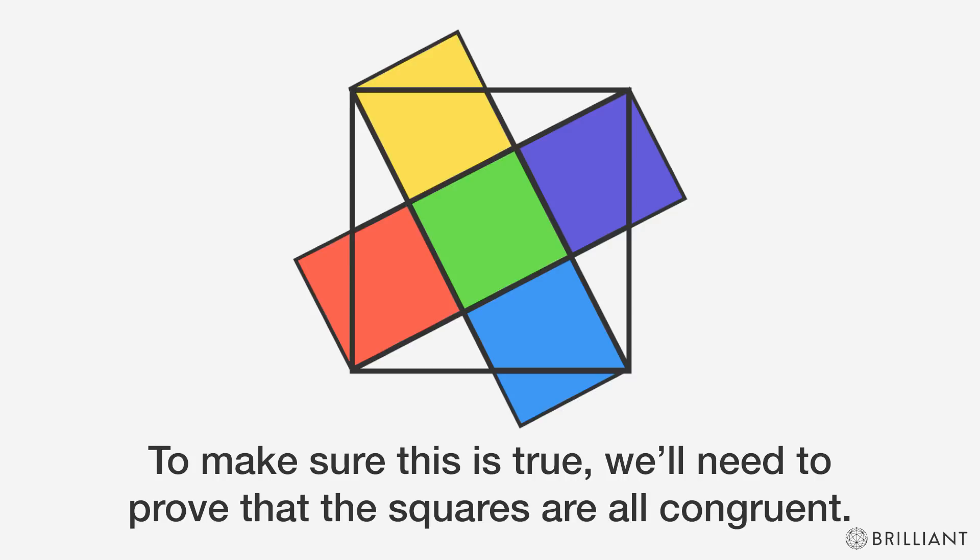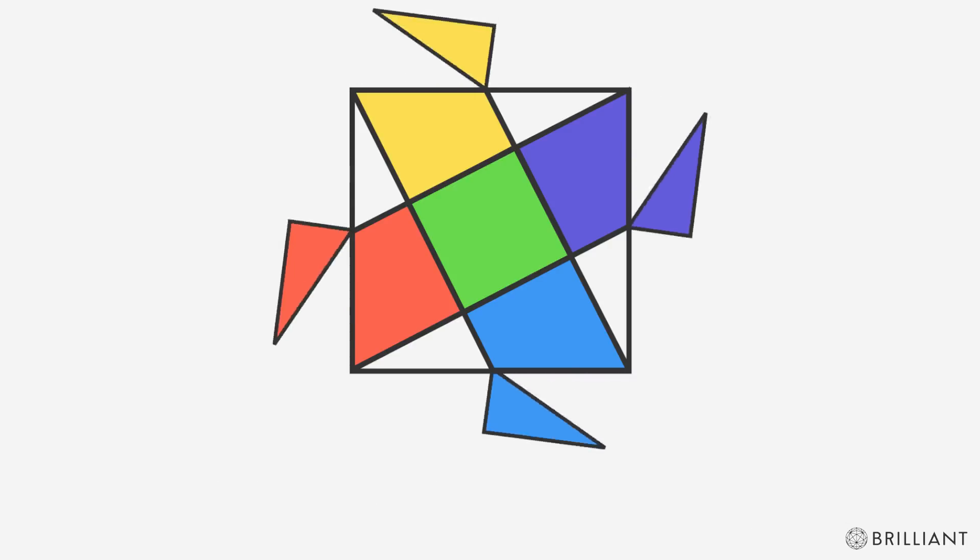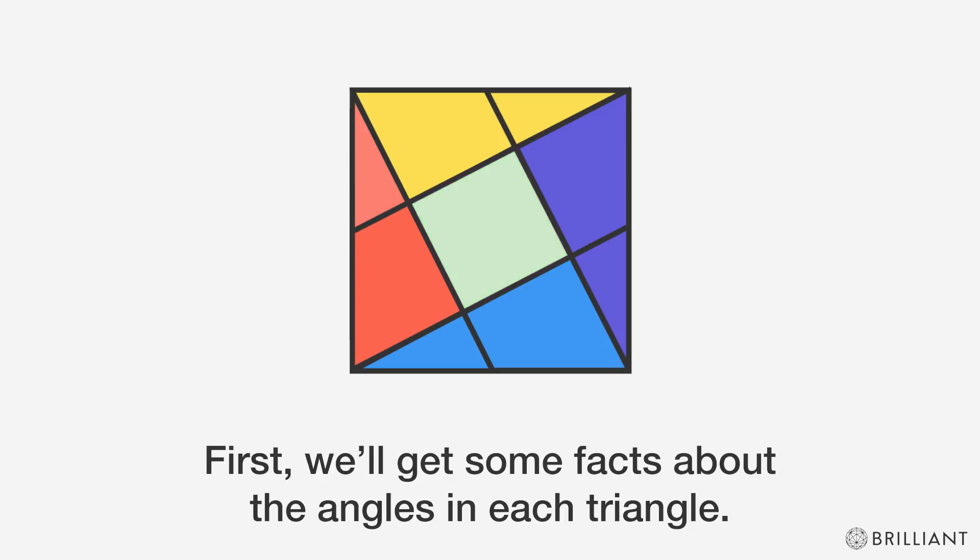To make sure that this is true, we'll need to prove the squares are all congruent. First, we'll get some facts about the angles in each triangle.